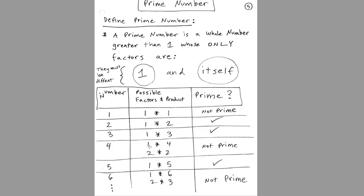4 is not prime — we can certainly list 1 and itself, but we can also list 2 times 2. So that means not a prime; we found something different than 1 and itself. 5 is prime because the only factors are 1 and 5. For 6, as soon as we find something different than 1 and itself, we know it's not a prime.